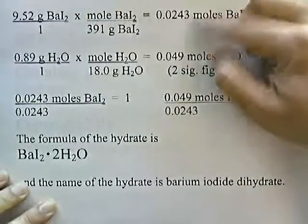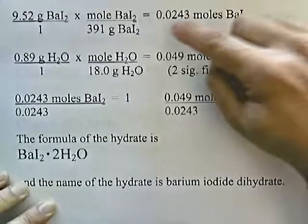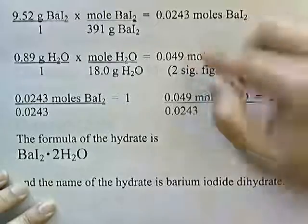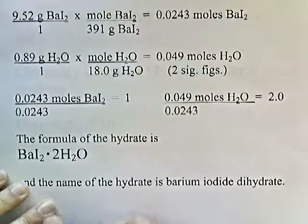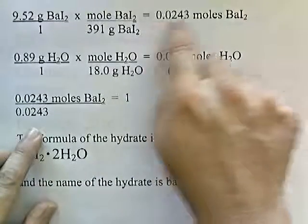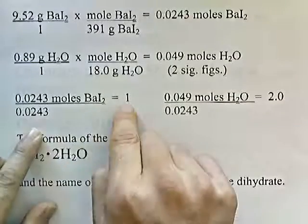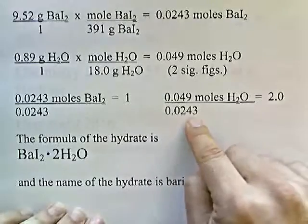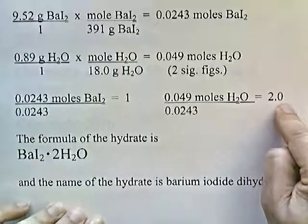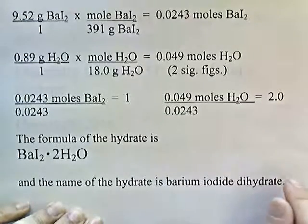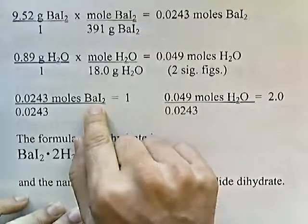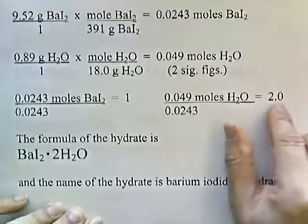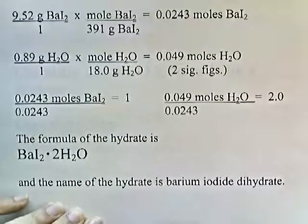We now look at these and see which one's the smallest. 0.0243 is smaller than 0.049, so we're going to divide both of these by 0.0243. 0.0243 divided by itself gives 1. And then 0.049 divided by 0.0243 gives 2. So it looks like the ratio of barium iodide to water is 1 to 2. There are 2 water molecules attached to each barium iodide formula unit.